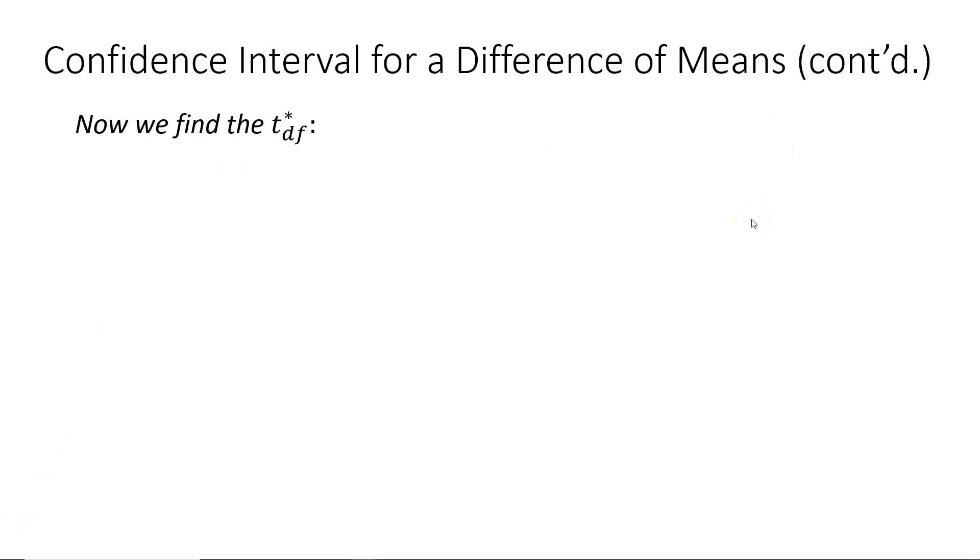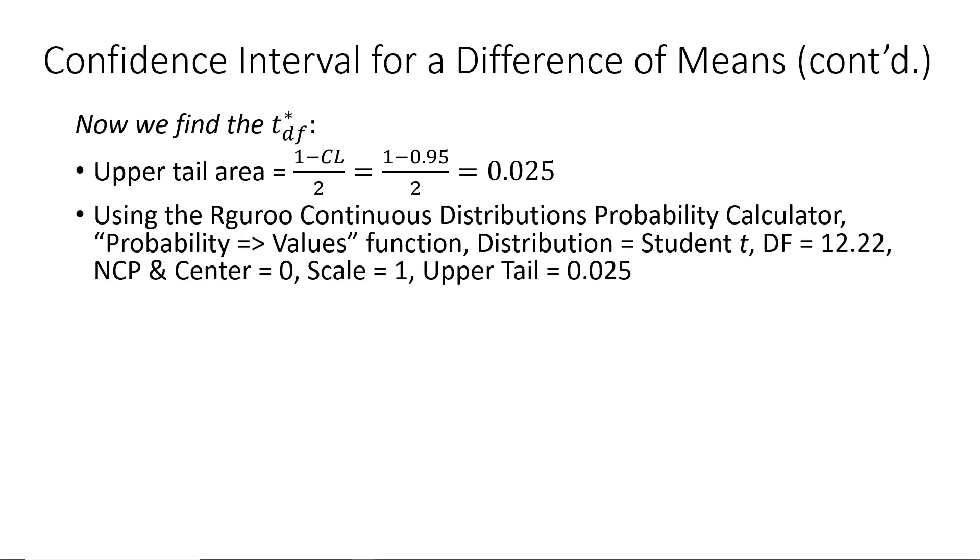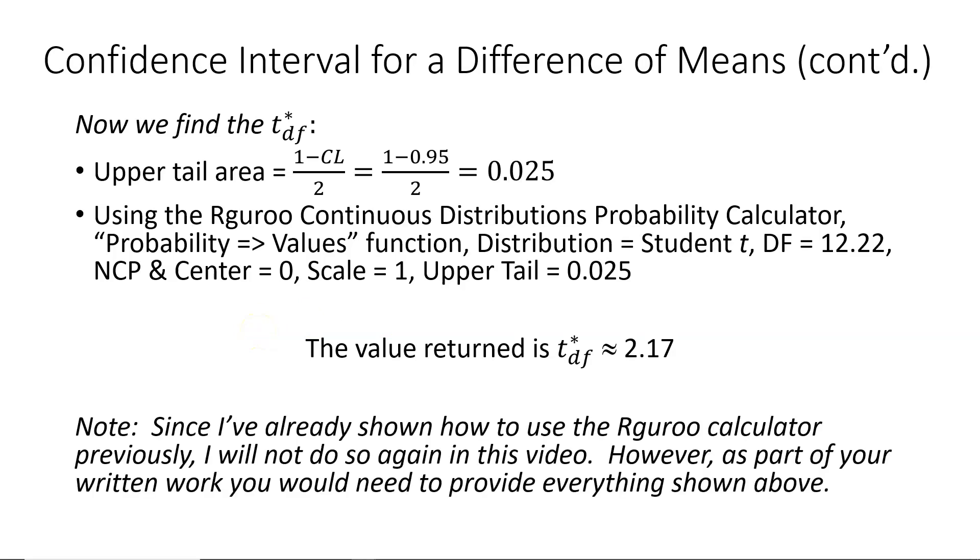So the last piece of information we need to complete our sketch is the t* value. We begin that process by finding the upper tail area that we will need for the our guru calculator. In this case, that area is 0.025 based on a confidence level of 95%. Then I go ahead and write down on paper what I would do within our guru to find the t* value. And lastly, I would write the t* value down on paper. In this case, it's approximately 2.17. Note that since I've already shown how to use the our guru calculator, I'm not going to do so again in this video. However, as part of your written work, you would need to provide everything that is shown above.